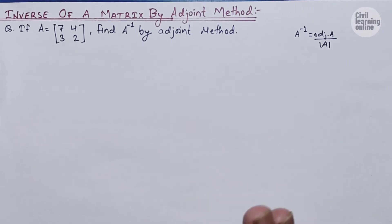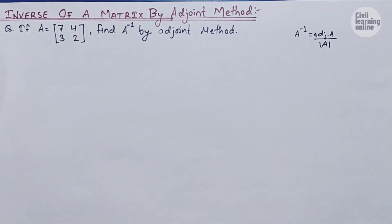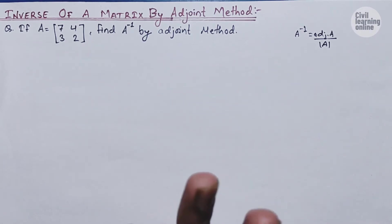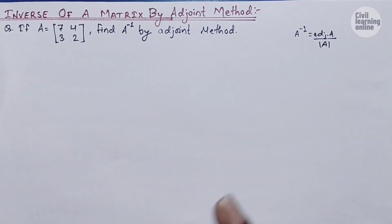The inverse of a matrix is possible only if our matrix is a non-singular matrix. A non-singular matrix is one whose determinant is not equal to zero. Those matrices whose determinant equals zero are called singular matrices.